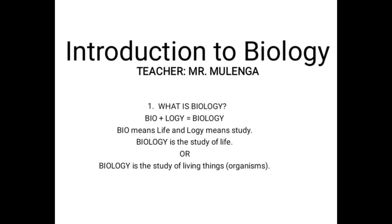Having understood that, we are going to look at the characteristics of living things, or the characteristics of living organisms. The processes of life that occur in all organisms are referred to as the characteristics of living organisms. An organism is an individual form of life consisting of a single cell or a complex of cells, in which organelles or organs work together to carry out life processes.